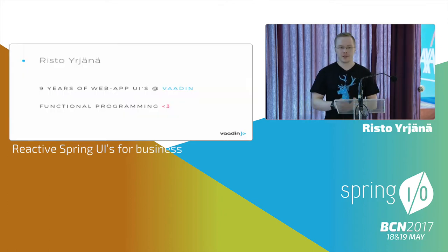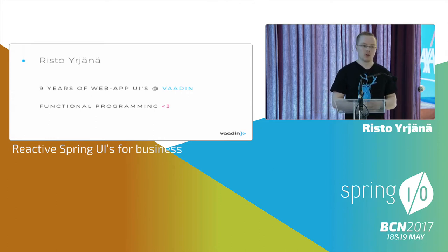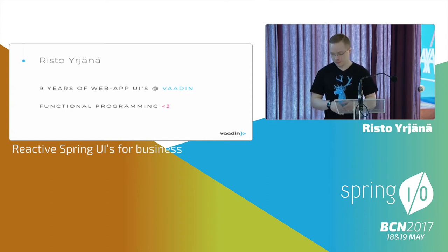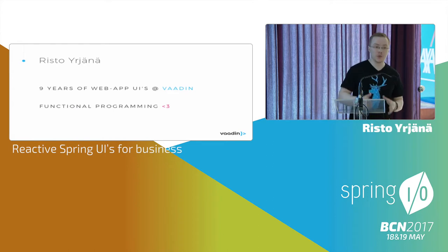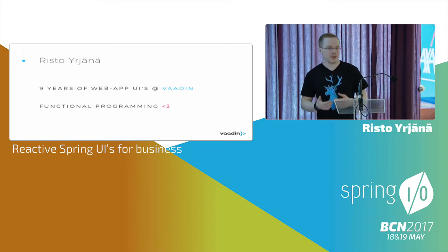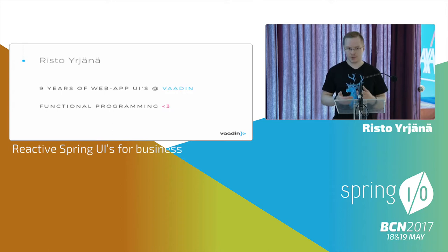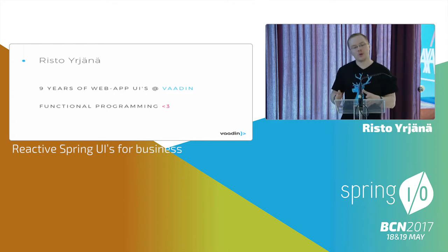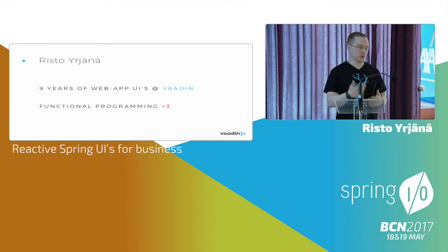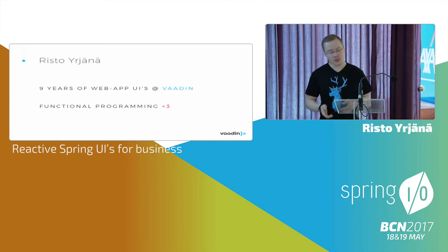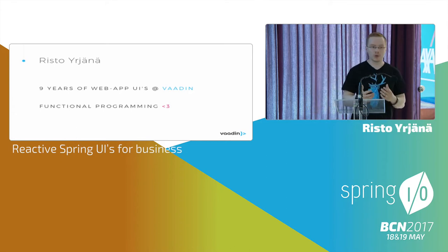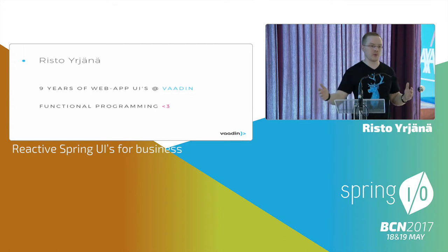My name is Risto, and for the past nine years I have been working at Vaadin building all kinds of web application UIs. Early on during those nine years, I really fell in love with functional programming — functional programming and anything related, including reactive streams. I noticed early on in our UI projects that a lot of the code was just getting data from different backend systems, mapping, filtering, combining, and displaying data.